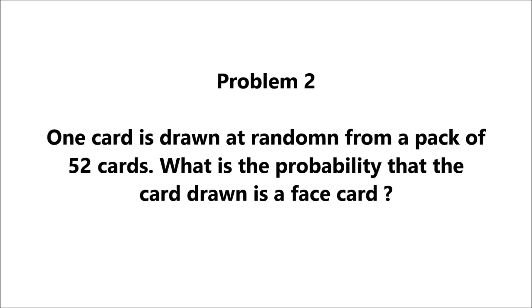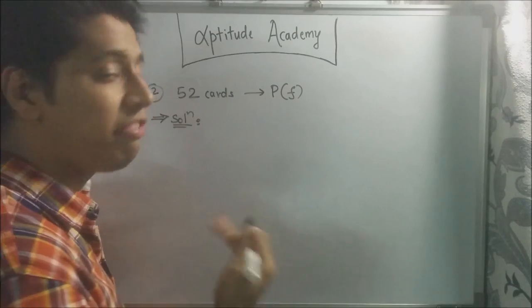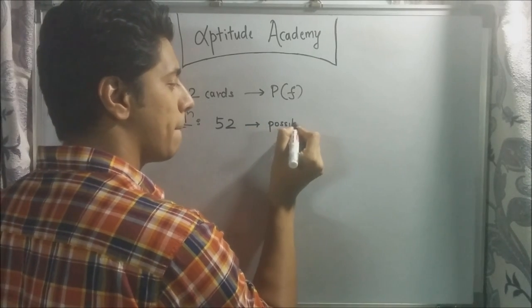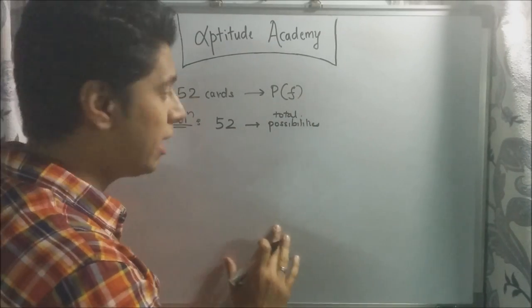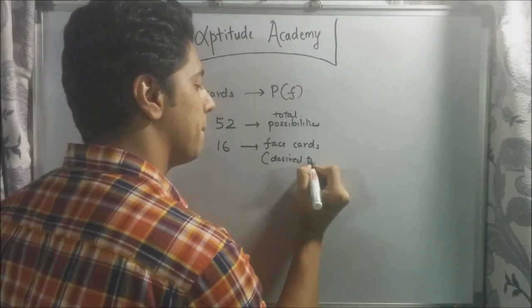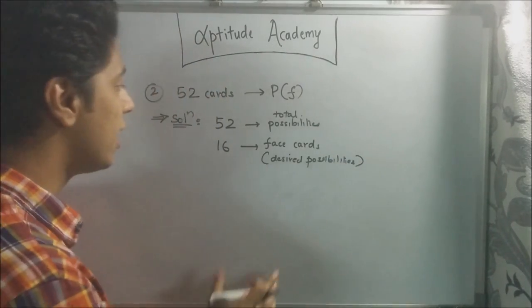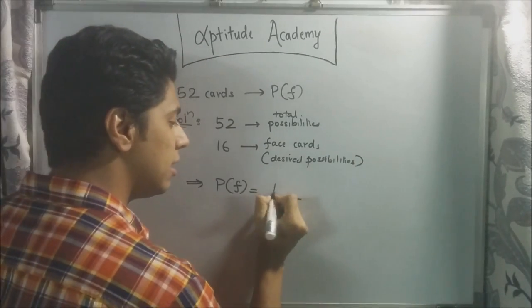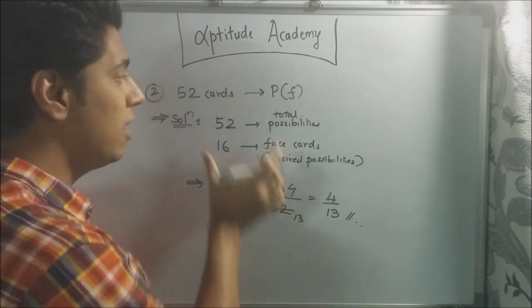Problem two: one card is drawn at random from a pack of 52 cards. What is the probability that the card drawn is a face card? A standard deck has 52 cards, so there are 52 total possibilities. The information you need to know beforehand is that there are 16 face cards in a standard pack — these are our desired possibilities. So the probability of getting a face card is 16 divided by 52, which simplifies to 4 by 13. That is your final answer.